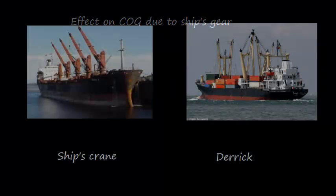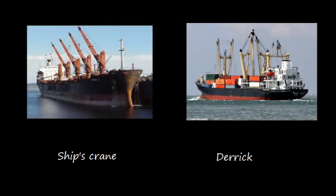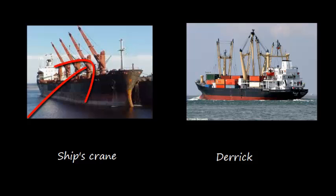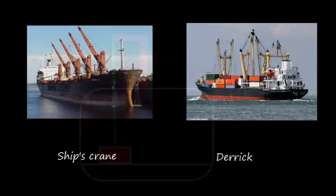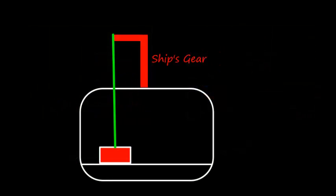Let's discuss the effect on center of gravity due to ship's gear. A ship can have a ship's crane or the derrick. Consider this in the athwartship direction — this is the ship's gear and this is the head of the ship's gear.